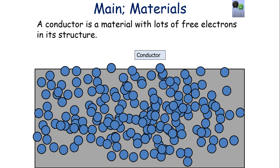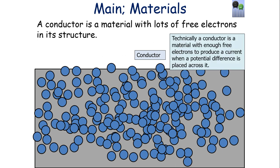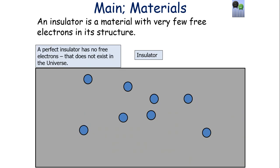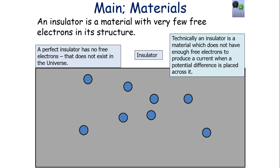On the particle level, a conductor is a material with lots of free electrons in its structure — electrons which are able to move about freely, so it can carry a current. Technically, a conductor is a material with enough free electrons to produce a current when a potential difference is placed across it. An insulator is a material with very few free electrons; in theory a perfect insulator has none at all, though we've never observed this. The technical definition of an insulator is a material which doesn't have enough free electrons to produce a current when a potential difference is placed across it.